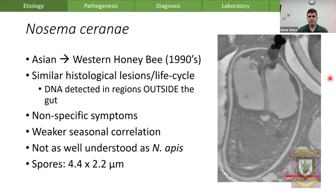Compared to Nosema apis, the clinical findings for Nosema ceranae are more non-specific, more oriented towards immunosuppression and less so for dysentery. There is a weaker seasonal correlation — there doesn't appear to be that fall and spring spike. It's not as well understood in terms of its pathology, and its spores are slightly smaller.